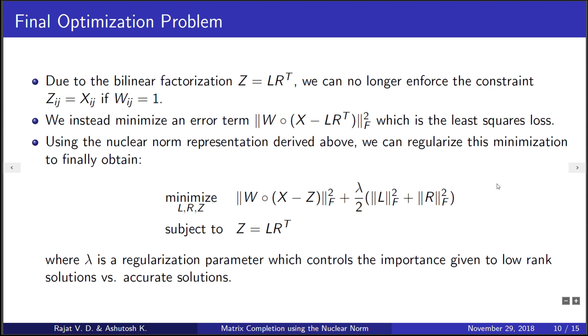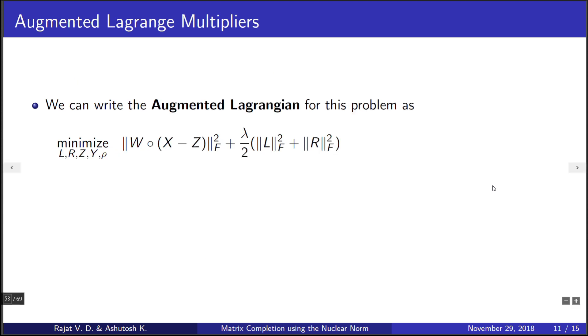To solve this optimization problem, we formulate something called the augmented Lagrangian. The augmented Lagrangian contains the original objective function plus a Lagrange multiplier Y times the constraint equation. We have now formulated the Lagrangian, and to this we augment it by adding a penalty term, which is the Frobenius norm of the constraint. Note that rho here is a penalty factor. We have now reformulated the problem to have additional optimization variables but no more constraints.